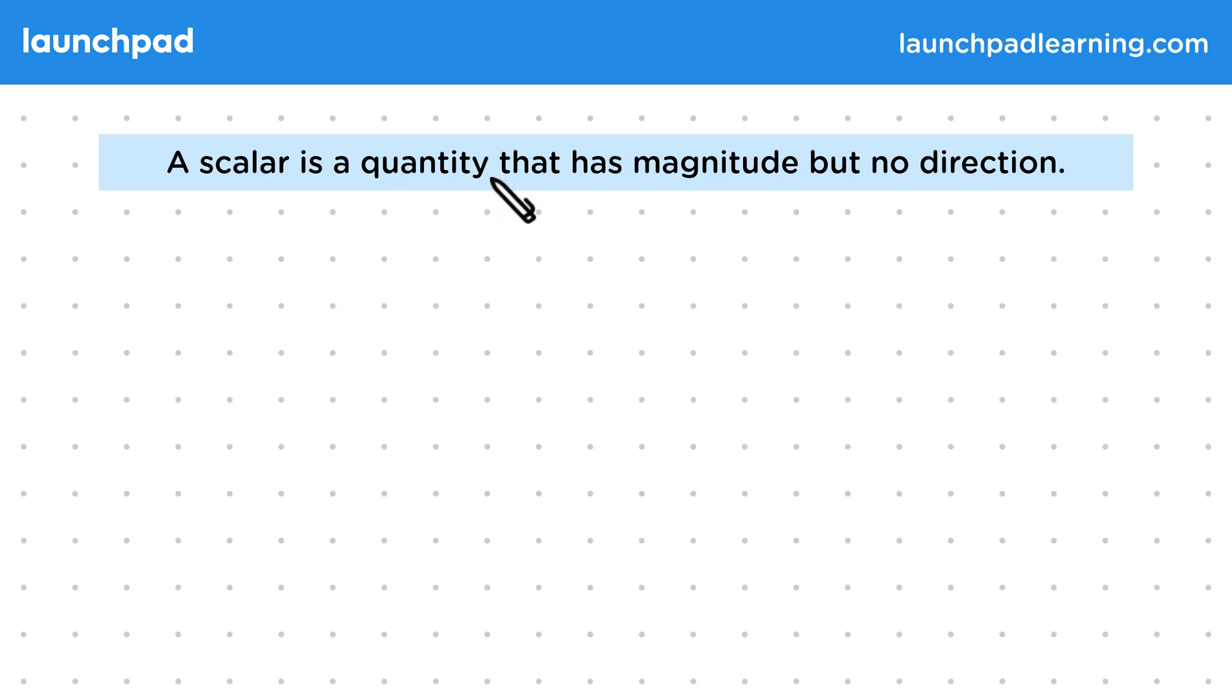A scalar is a quantity that has magnitude but no direction, where by magnitude we just mean the physical size of something.